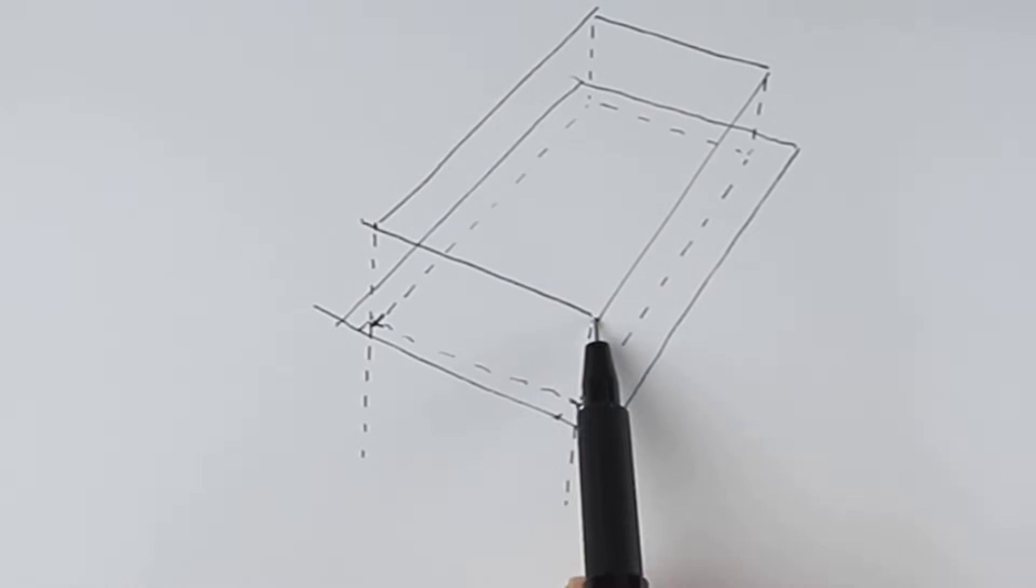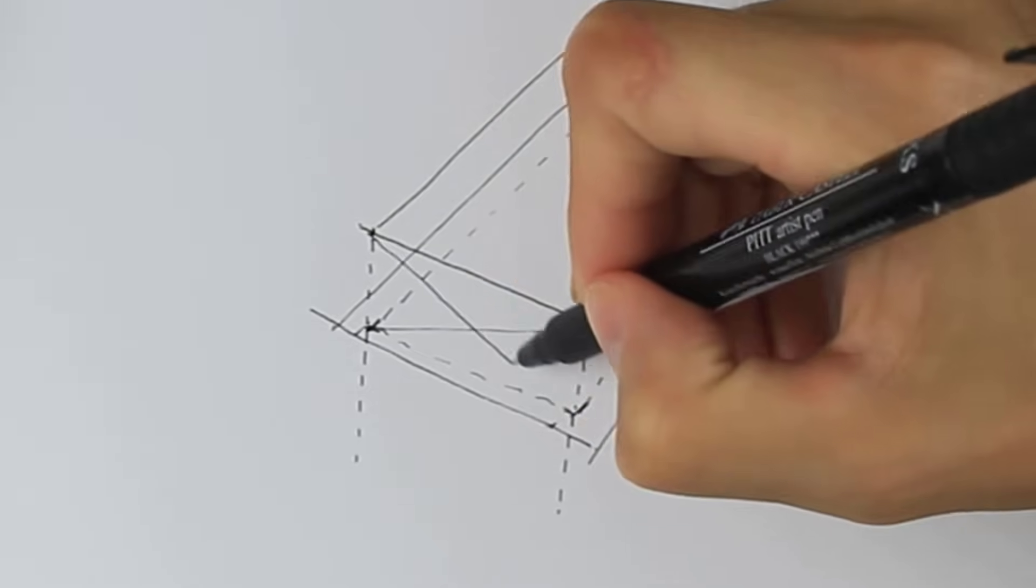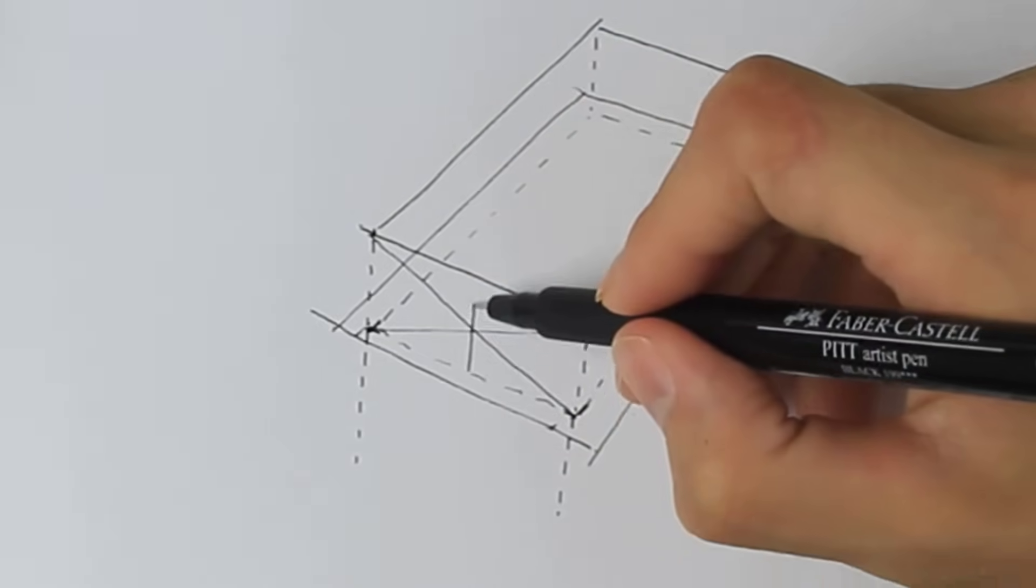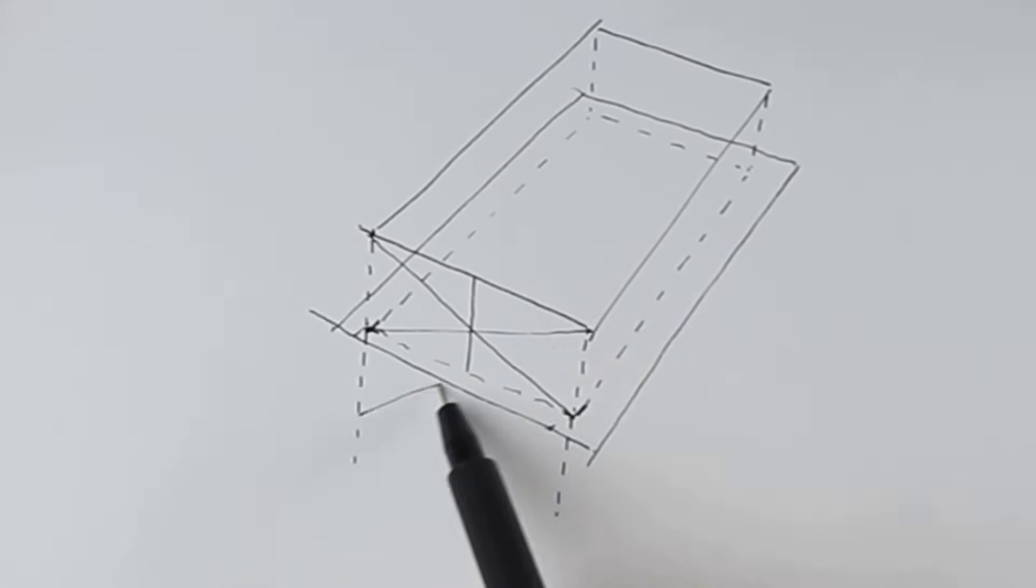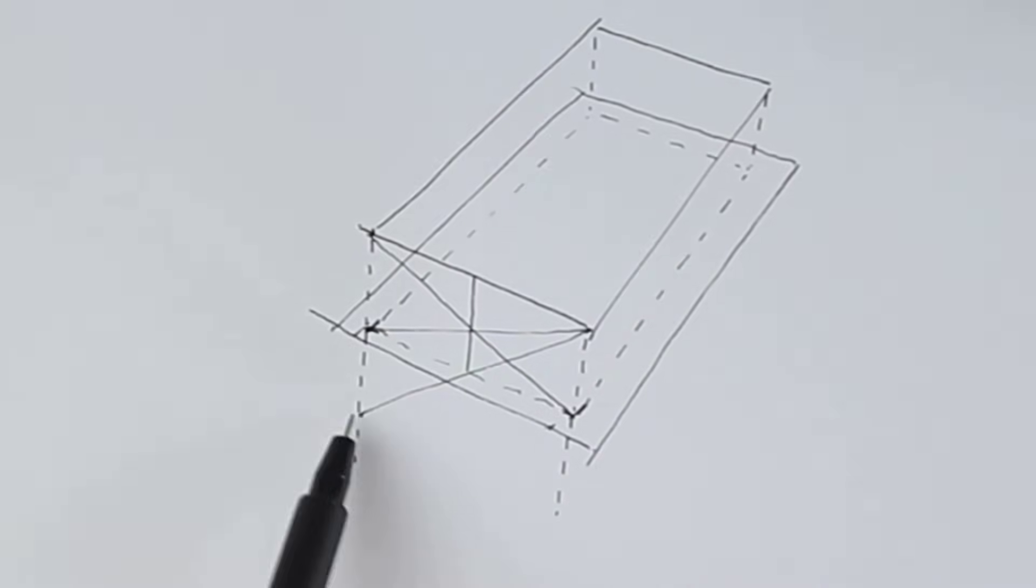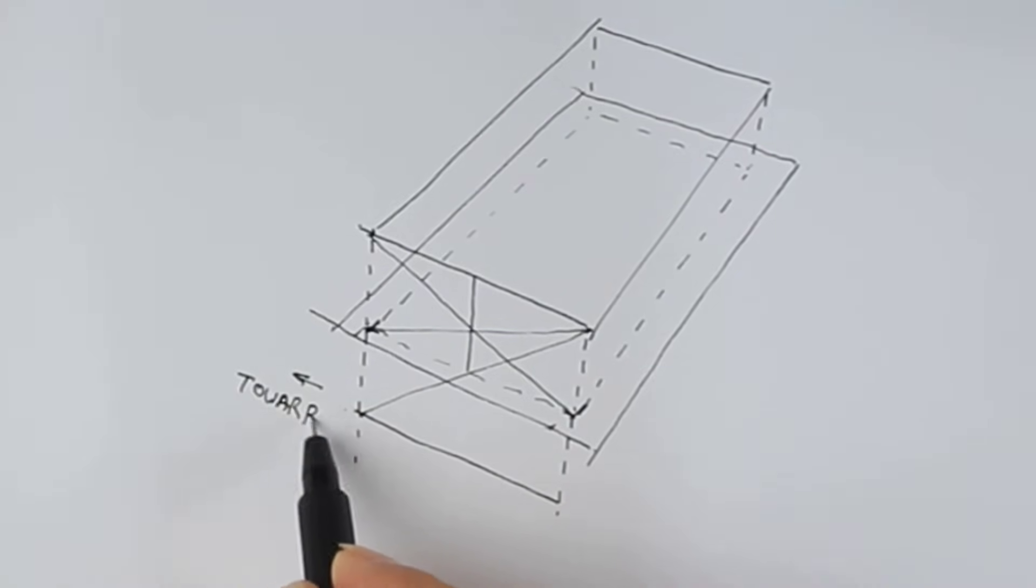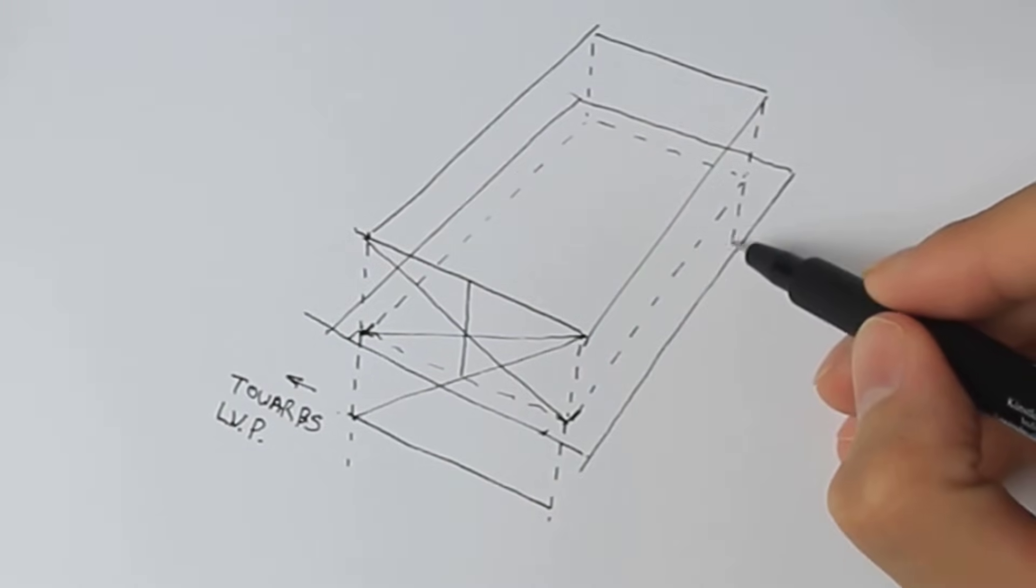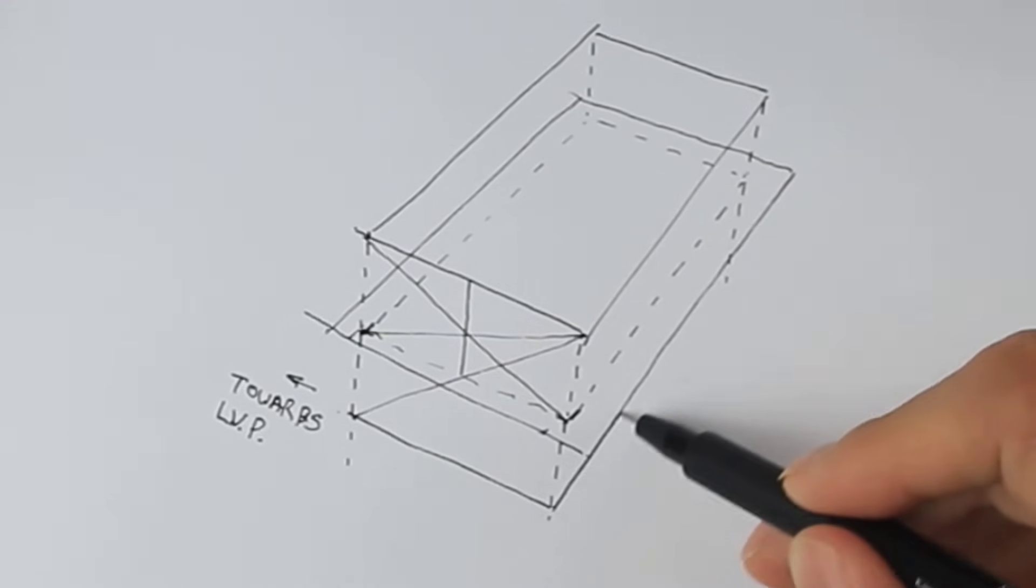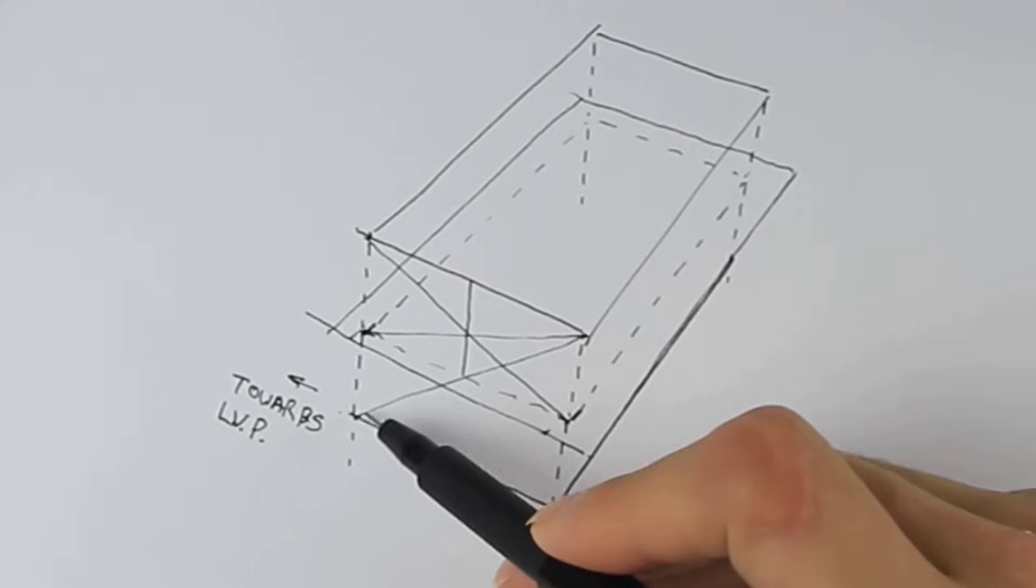Now we're just going to do the same thing again. Draw a line from corner to corner to find the center. Extend that center line. Now create a line from the corner that intersects the mirror plane. Where it meets with the dotted vertical line is where our mirrored rectangle should be placed. I extend these lines back towards the right vanishing point until they intersect with the verticals.